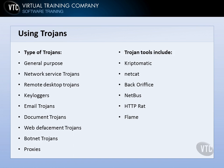General purpose Trojans — if you've heard of BackOrifice or NetBus, those are two popular general purpose Trojans that can do a little bit of everything. Network service Trojans like FTP Trojans and Telnet Trojans are designed to open up an FTP port and send data through it, so you might see port 21 open on a computer that shouldn't be. Remote desktop Trojans allow a hacker to take control of a system through VNC or RDP. Keylogger Trojans are very popular because they're used to intercept credentials and send them to an attacker.